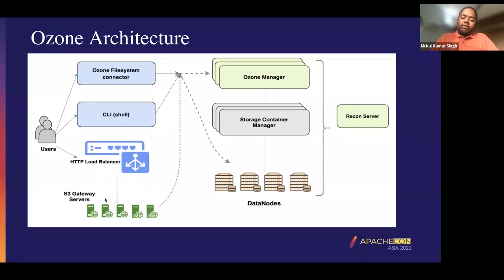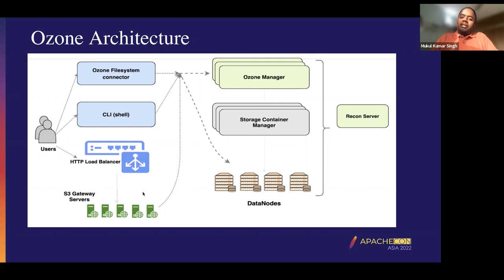The next thing we have here is the S3 gateway servers. The purpose of S3 gateway servers is to provide an S3 access endpoint where we would be supporting the Amazon S3 protocol for any users to access Ozone using the Amazon S3 REST protocol.